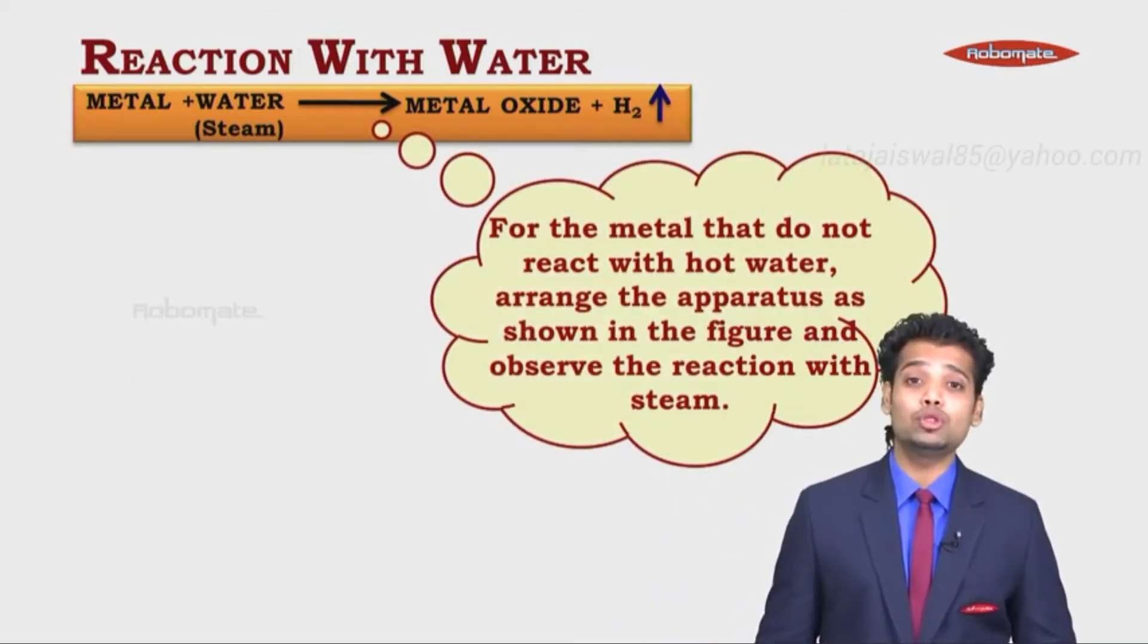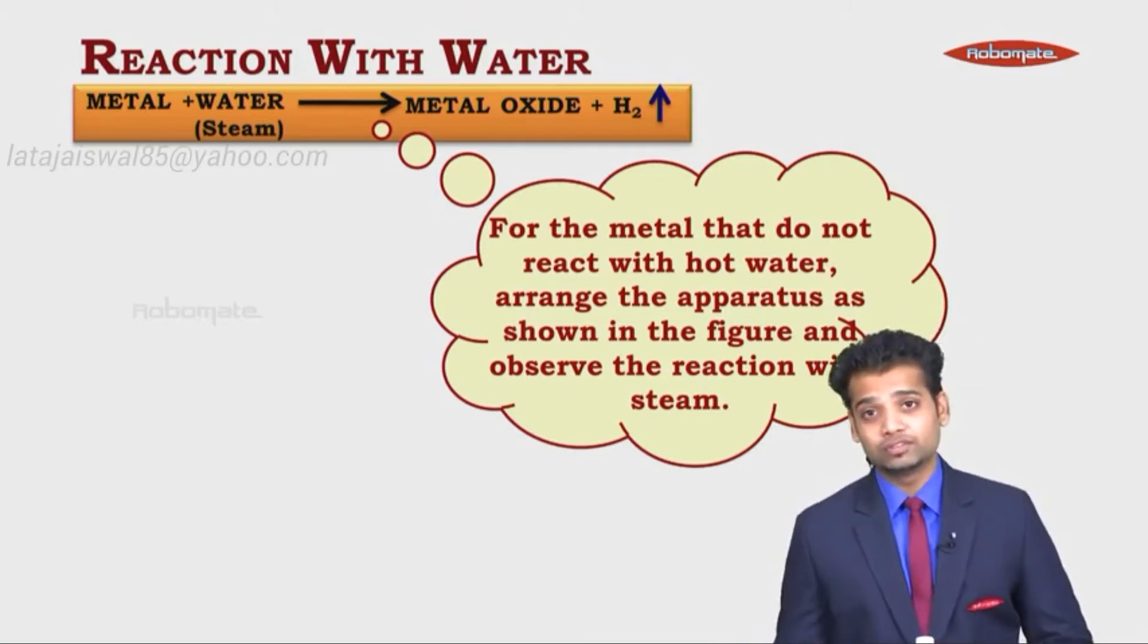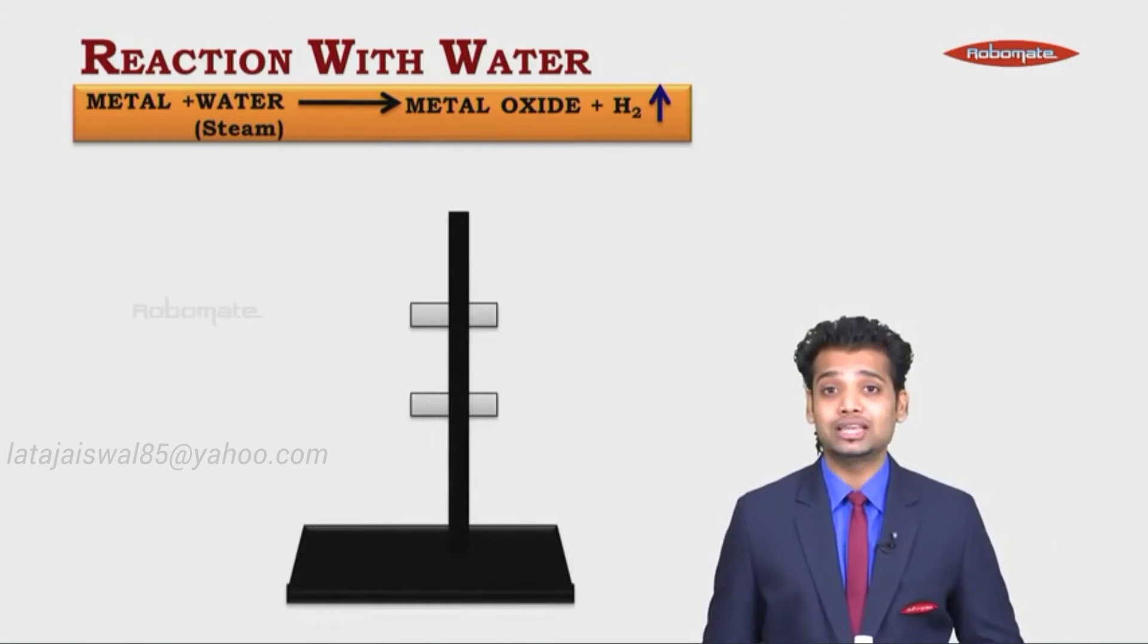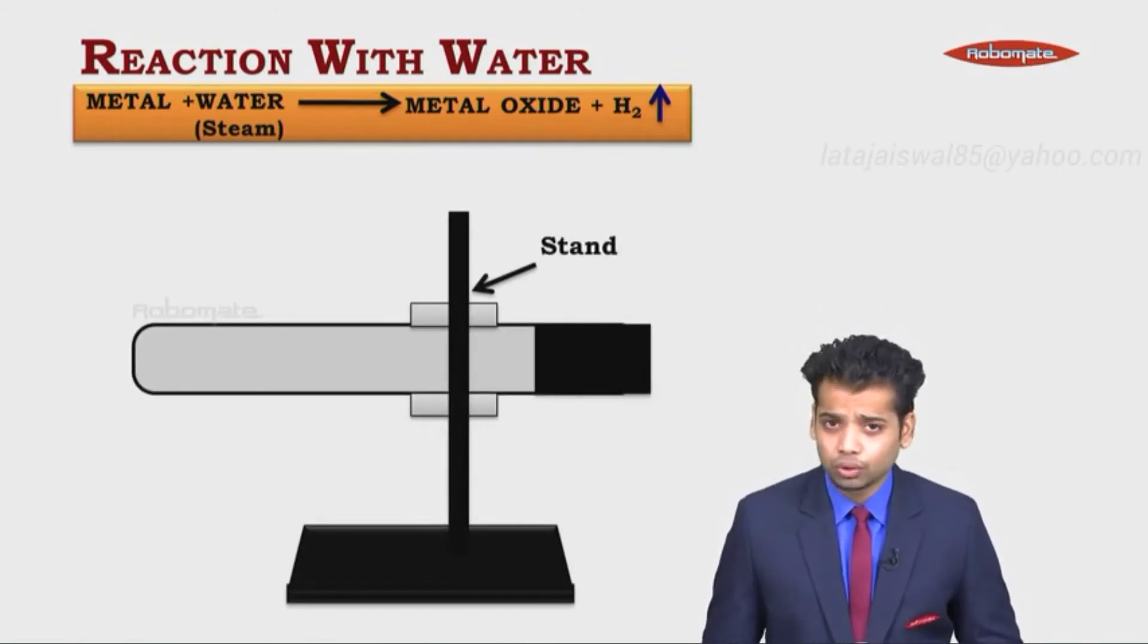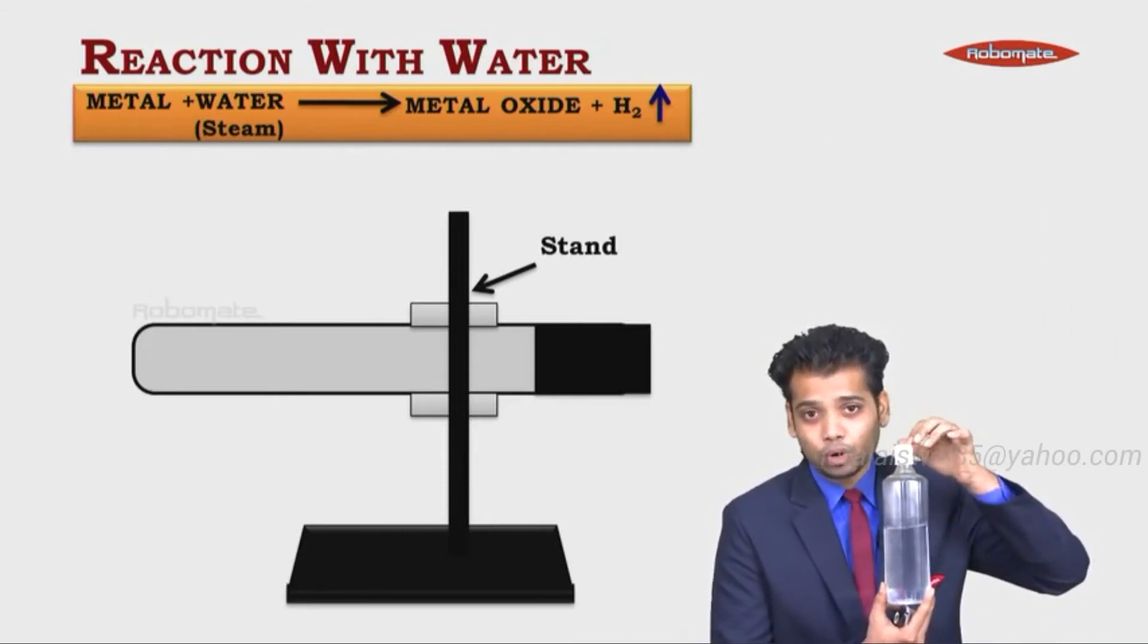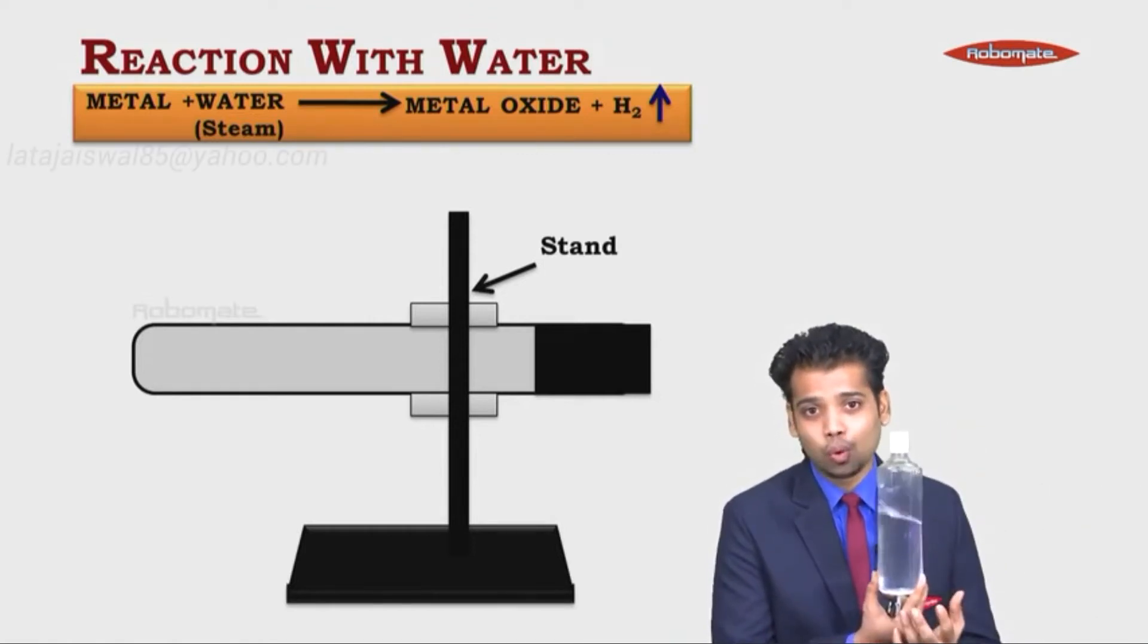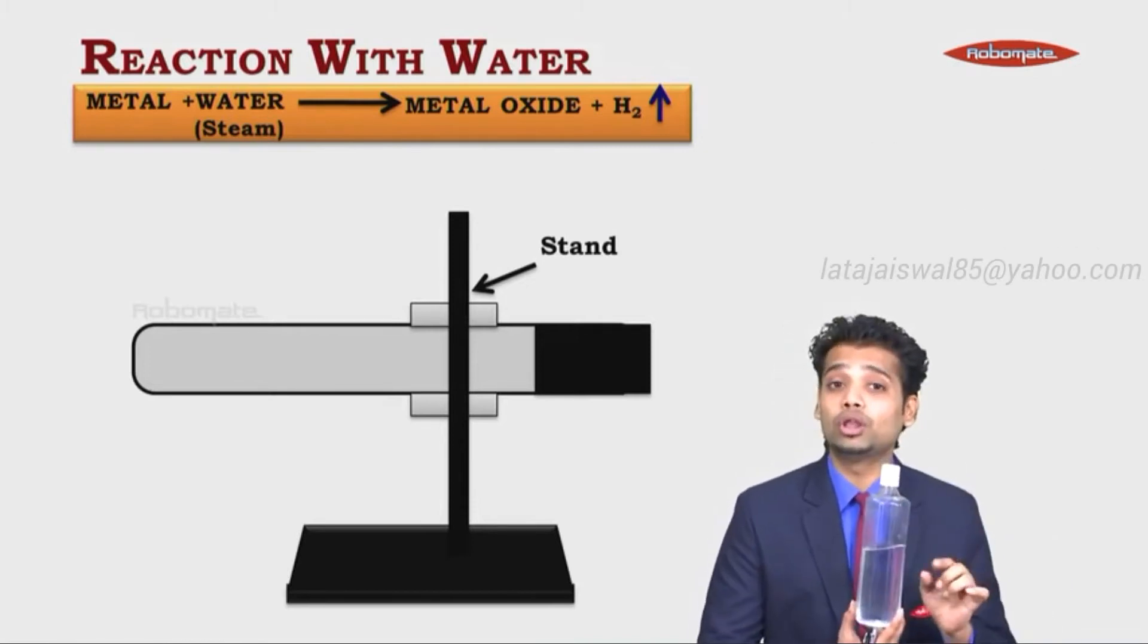For the metals that do not react with hot water, arrange the apparatus as shown in the figure and observe the reaction with steam. Now for this, we are using a stand and a test tube which is diagonal. Why so? I will show you with the help of this bottle. Imagine the bottle cap as the metal and you start heating up. What happens is the water starts boiling. When it does so, the water at some point is going to touch the metal which we don't want.